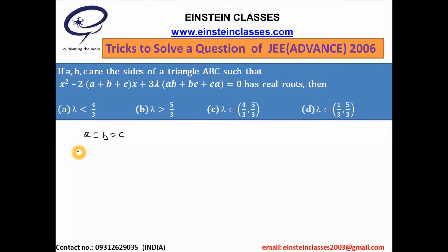In this case the equation becomes X² - 6AX + 9λA² = 0. The discriminant of this equation will be D = 36A² - 36λA² = 36A²(1 - λ).